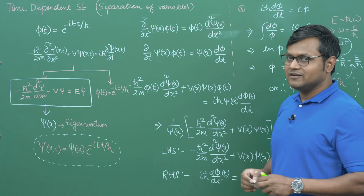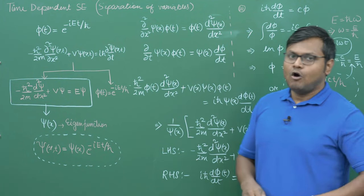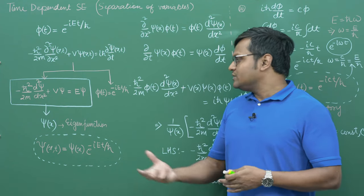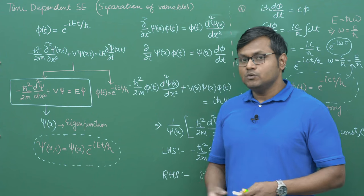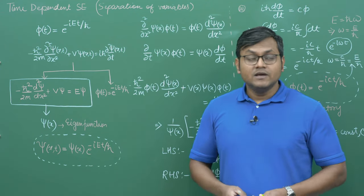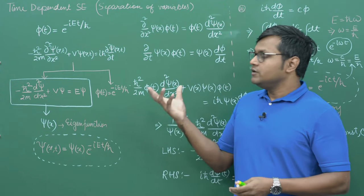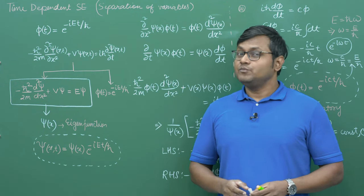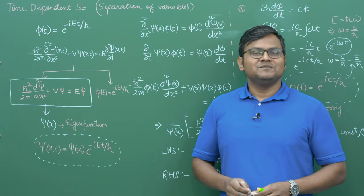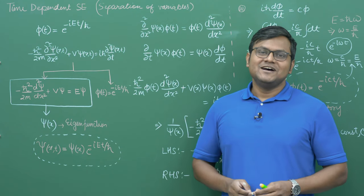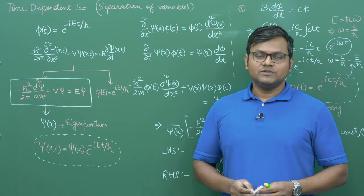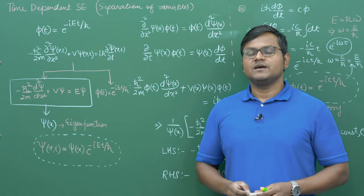That gives us the theoretical framework for the wave mechanical formulation of quantum mechanics — the Schrödinger's equation. In coming lectures, we'll look at the probabilistic interpretation of quantum mechanics, the wave function, expectation values, and how to solve the Schrödinger's equation for different potentials — revealing the weird, bizarre, and surprising world that quantum mechanics opens up. I'm Divya Jyoti Das, thank you very much, see you next time, take care, bye.